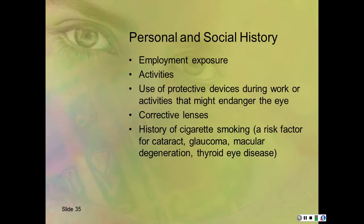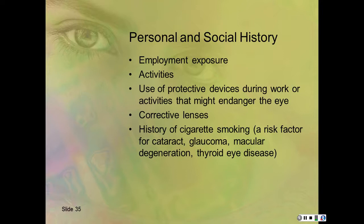For personal and social history, look at activities. Find out if they're around smoke a lot—campfires, wood-burning stoves, as well as cigarette smoke. Cigarette smoke increases cataracts, as does any kind of smoke. Not wearing UV protection also increases cataract formation. You also see more glaucoma, macular degeneration, and thyroid eye diseases with cigarette smoke.